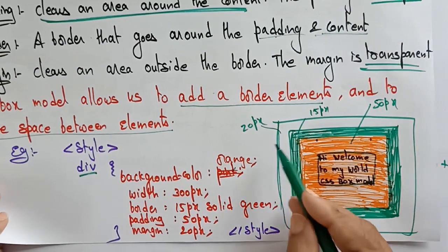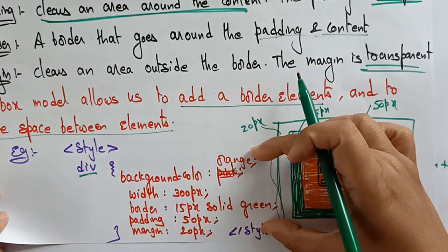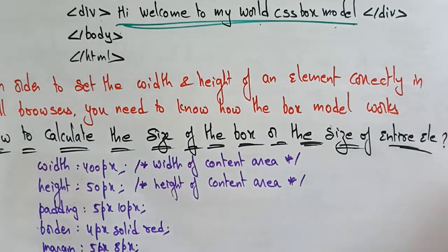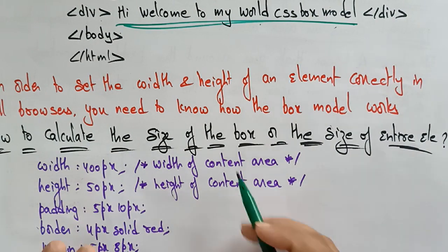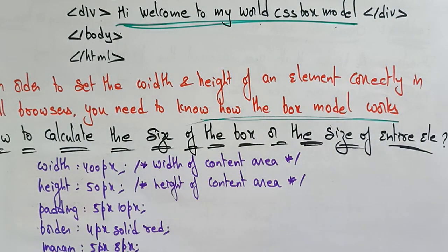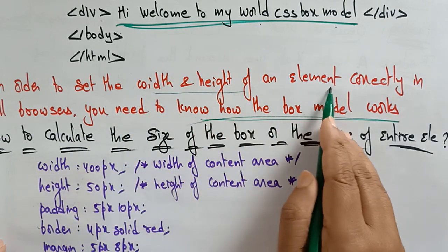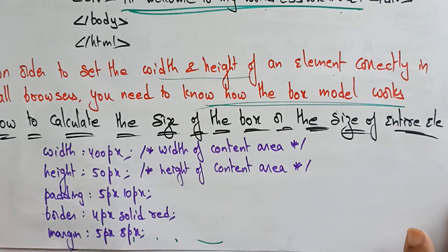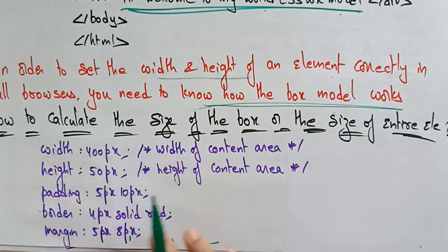It will appear with the help of all this content. In order to set the width and height of an element correctly in all browsers, you need to know how the box model works. By default, you can't set it directly because different browsers have different window sizes. So in order to set the width and height of an element correctly in all browsers, you need to know how the box model works. Based on the box size only, the content will appear clearly on different browsers.